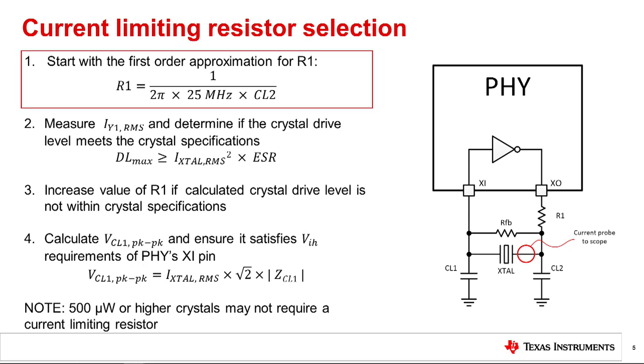The first step is to approximate the value of R1. This is done by calculating the impedance of the CL2 load capacitor at 25 MHz. The resistor should be chosen such that its resistance is equal to CL2's impedance at the frequency of oscillation. Parasitic effects can be disregarded for this first order approximation.